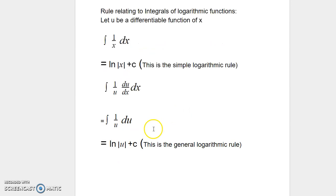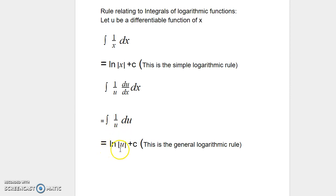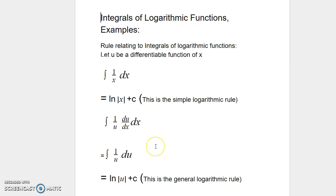The other rule is as follows. If we have integral 1 over u times du/dx dx, or equivalently integral 1 over u du, the rule states that this translates to ln of u plus c. This is called the general log rule or the general logarithmic rule. These are the two types of rules related to integration of logarithmic functions.